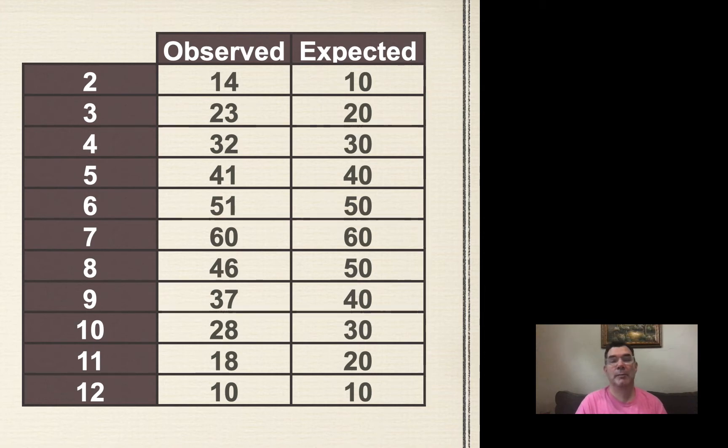And then, based on my knowledge of probability, I filled in the second column with how many times I should expect a 2 to be rolled, a 3 to be rolled, and so on. And that's all based on theoretical probability. So that is the observed, and that is the expected.